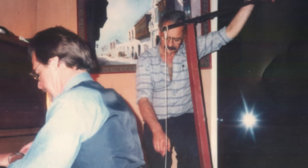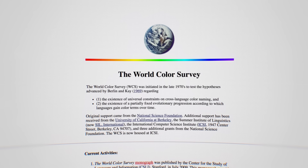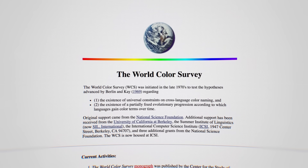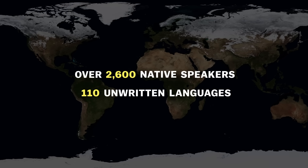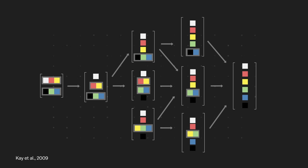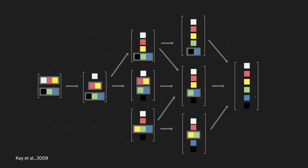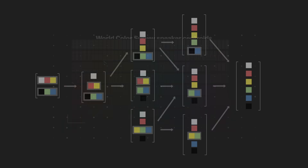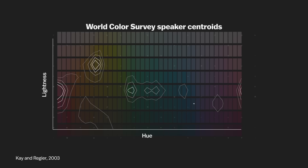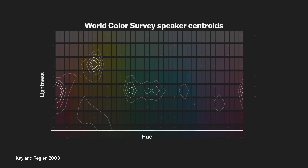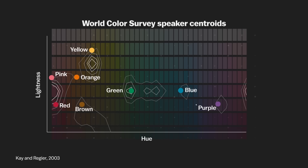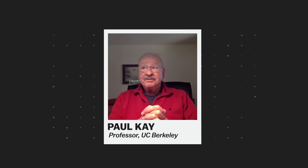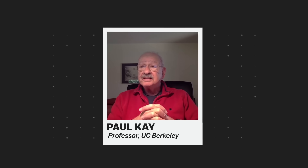But by the late 1970s, Berlin and Kay had a response for the critics — they called it the World Color Survey. They conducted the same labeling test on over 2,600 native speakers of 110 unwritten languages from non-industrialized societies. They found that with some tweaks, the color hierarchy still checked out. 83% of the languages fit into the hierarchy. And when they averaged the center point of where each speaker labeled their language's colors, they wound up with a sort of heat map. Those clusters matched pretty closely to English speakers' averages. As Paul Kay puts it: most languages make cuts in the same place — some languages just make fewer cuts than others.